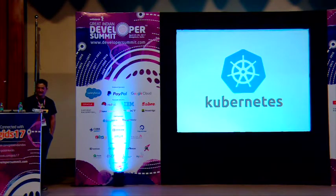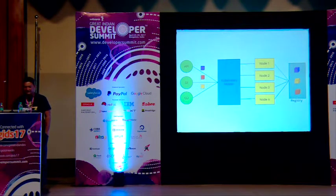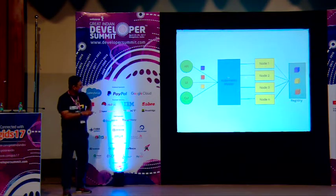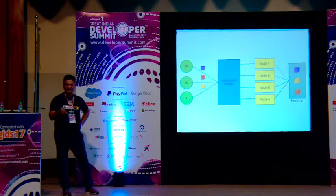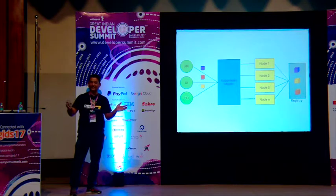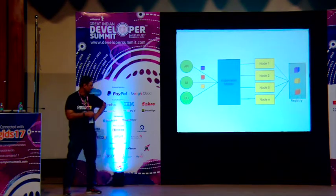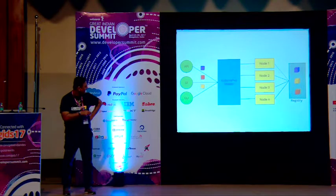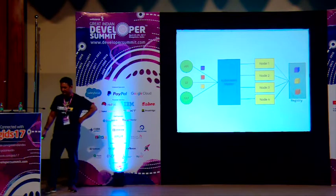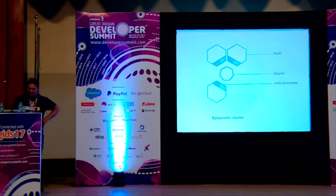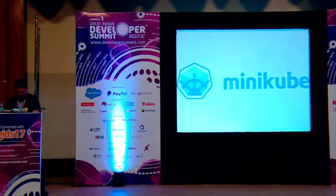Now let's talk about Kubernetes. Kubernetes has a master node and something called Minikube — you can download the Minikube version to your laptop and start using it. You can create your own cluster with multiple images working at the same time, interacting with each other. Through API, CLI, or UI you can control the Kubernetes master, which has multiple nodes that go to the registry.